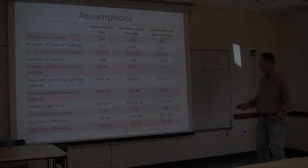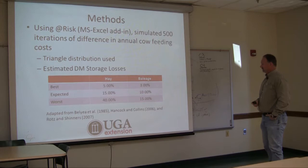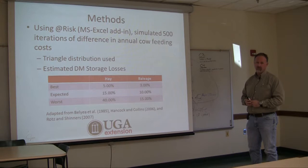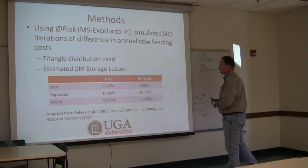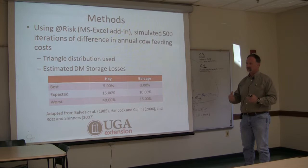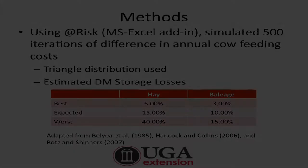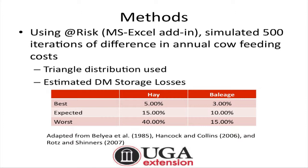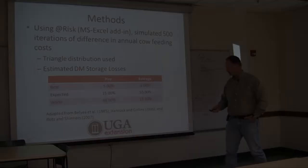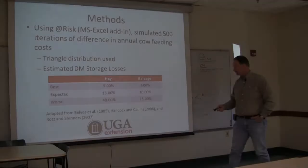The first scenario we looked at was whether baleage will pay for itself just on the basis of reducing storage losses. We ran a simulation — essentially repeating an experiment over and over using a computer — covering best case, expected case, and worst case scenarios. For hay, the best case loss is 5%, typically 15%, and worst case 40%. For baleage, best case is 3%, average about 10%, and worst case about 15%. These numbers came from reviewing several different studies.